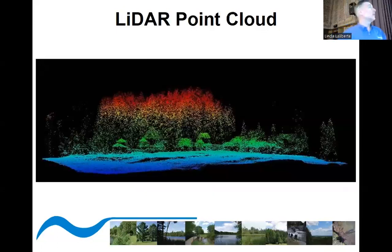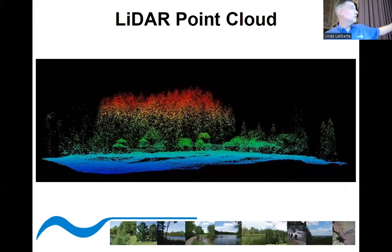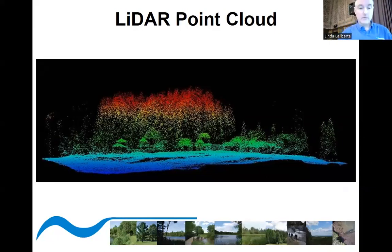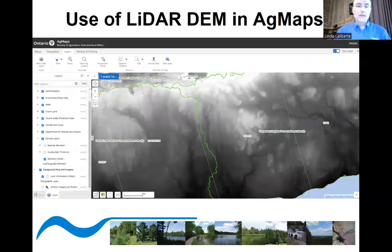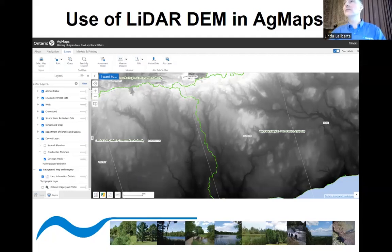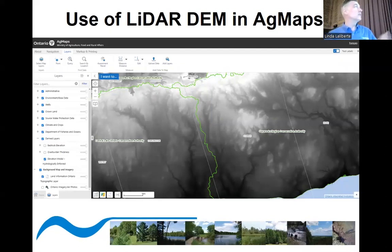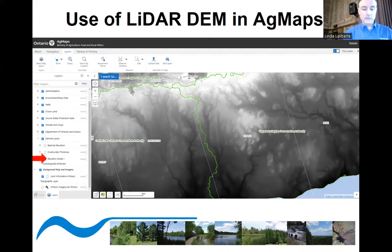This is an example of what a LiDAR point cloud looks like. You can see how it picks up vegetation, and you can also filter that vegetation out to get bare earth surfaces, which is what we use for our modeling. This data is the same information that the province uses in the Ag Maps software — so for any farmers in the audience, it's the same LiDAR data used in the Ag Maps app. There is an elevation model layer you can click on if you use Ag Maps.